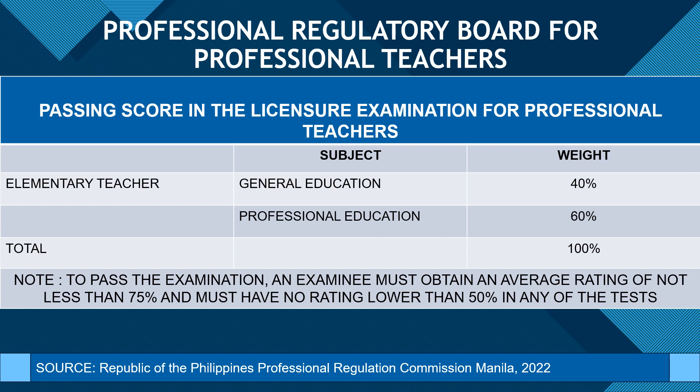In the licensure examination for professional teachers, or LEPT for elementary teachers, the passing score is determined by two distinct subject areas: general education and professional education, carrying respective weights of 40% and 60%. To successfully pass this rigorous examination, an examinee is required to achieve an average rating of no less than 75%, with the additional stipulation that no individual test should yield a score lower than 50%. These criteria, set by the Republic of the Philippines Professional Regulation Commission, ensure that individuals entering the teaching profession meet high standards of competence and knowledge.